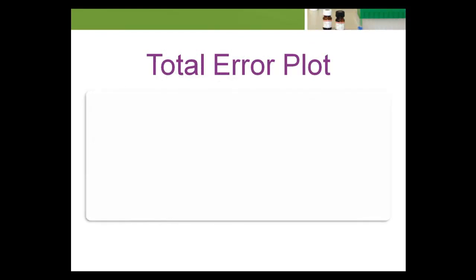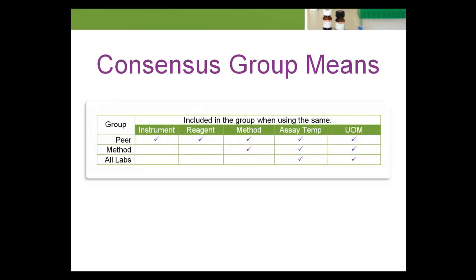Let's begin by learning about total error plots. The total error plot is constructed around a consensus group mean, or GM. Which of the following consensus group means should you use? Peer, method, or all labs.